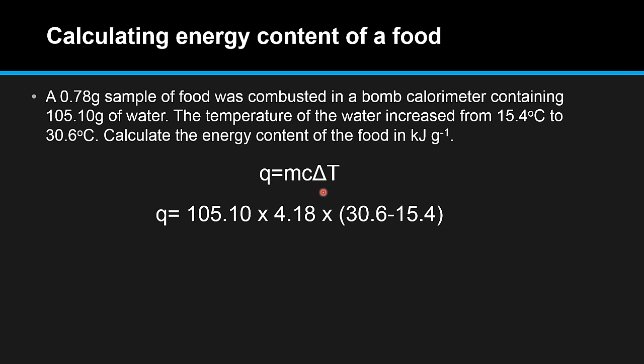Let's input those values into our equation. The mass of the water is 105.10 grams. The specific heat capacity of water is 4.18. The change in temperature is 30.6 minus 15.4. So that equals 6,677.6 joules per 0.78 grams of food.